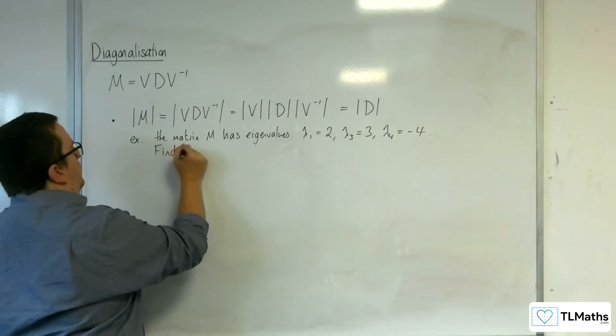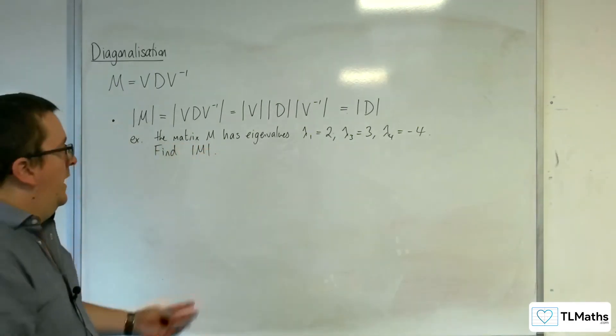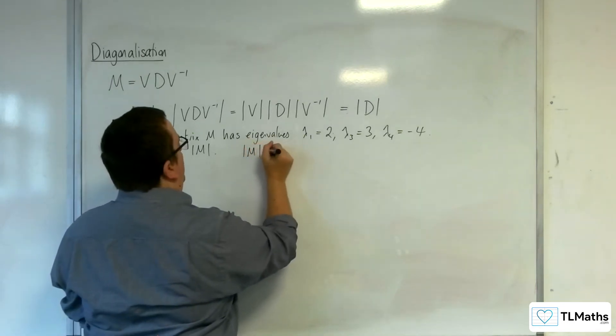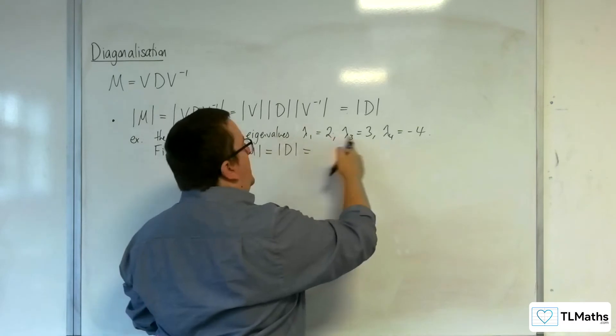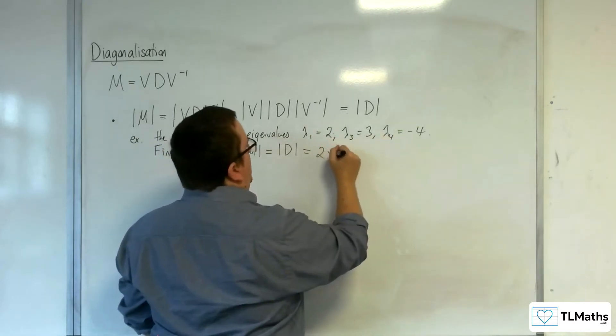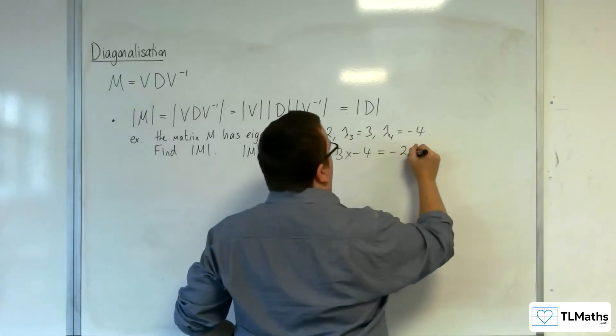Therefore, find the determinant of M. Well, the determinant of M is just going to be the determinant of the diagonal matrix, which is made up of these three, which is just going to be the product of those three. And so you get minus 24.